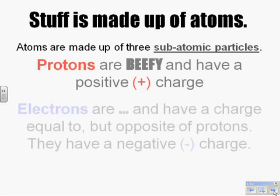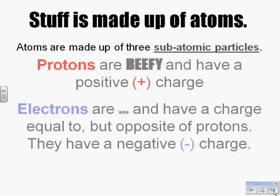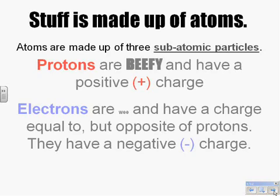Electrons are very wee, and they have a negative charge — the same size charge but opposite in nature as protons. We know that opposite charges, like positive and negative, attract to each other and draw each other together, whereas like charges repel each other.